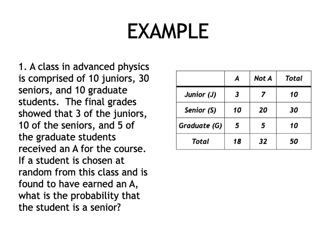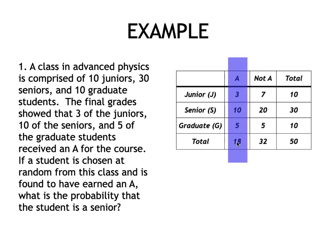The condition that must be satisfied is that the student earned an A. Among those who earned an A, what is the probability that the student is a senior? From our table, there are 18 students total who got an A, and of those 18, there are 10 who are seniors.